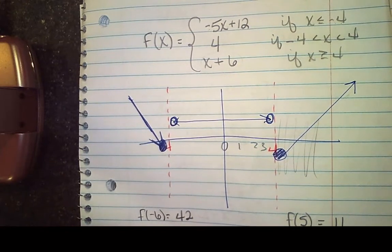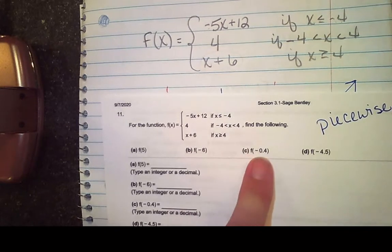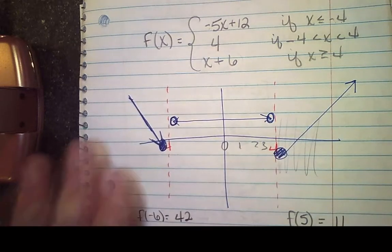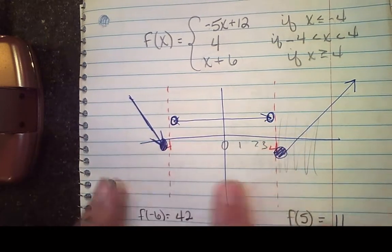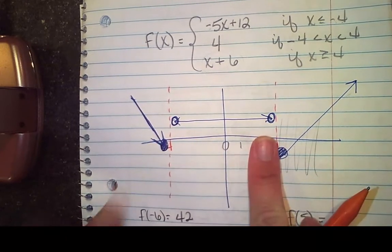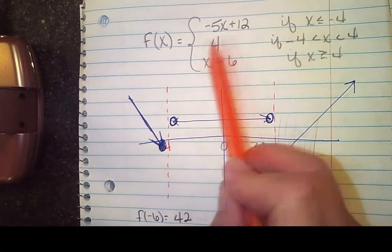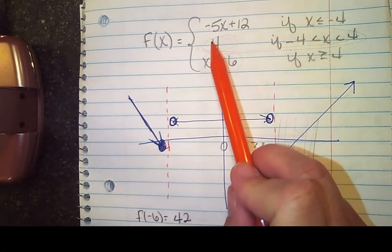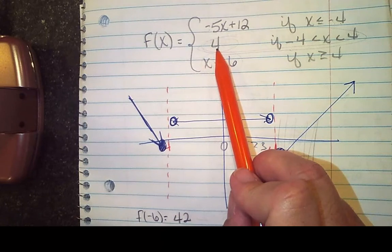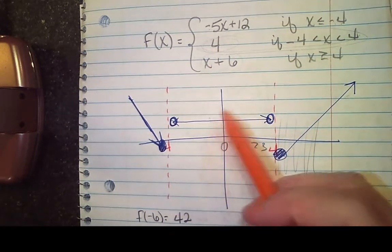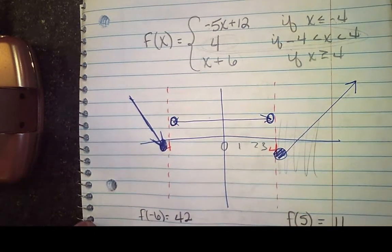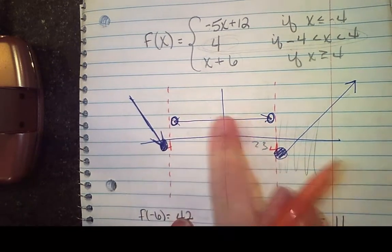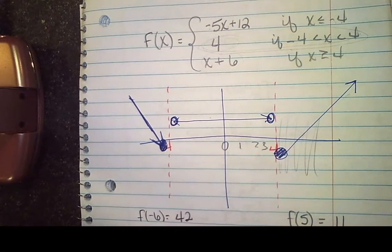The point (−6, 42) is on the graph. Then we have f of negative 0.4. Where is negative 0.4? It's going to be in this area right here — it's in between the two red lines. That means I need the middle part of this piecewise function. No matter what x you give in that interval, the corresponding y-coordinate will be 4. So f of negative 0.4 is 4.